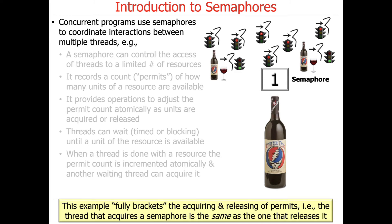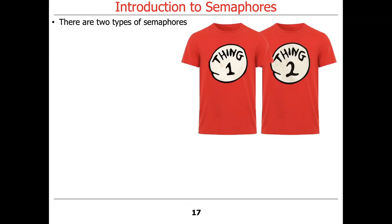This particular example fully brackets the acquisition and the release of the permits. In particular, the thread that acquires a semaphore is the same one that releases it. We will see that there are other scenarios where that is not the case.